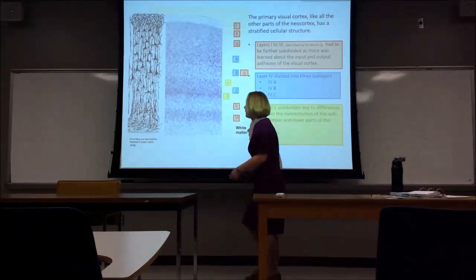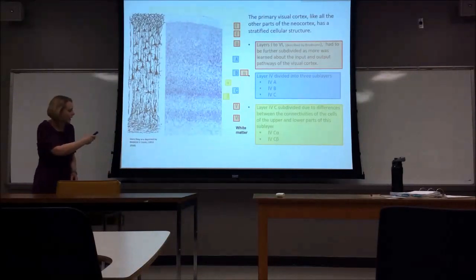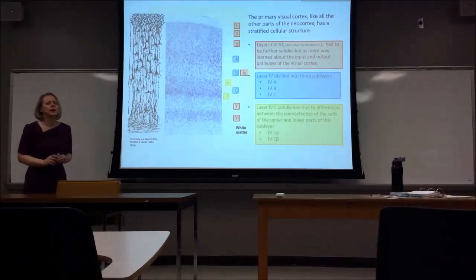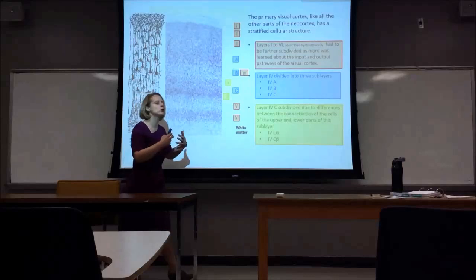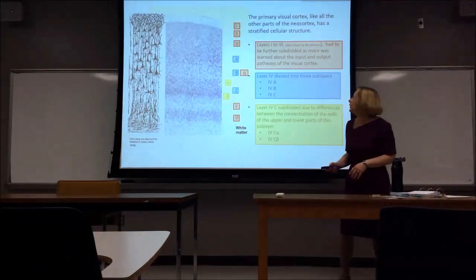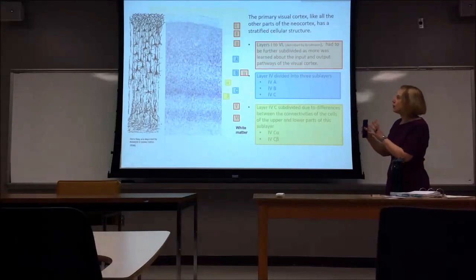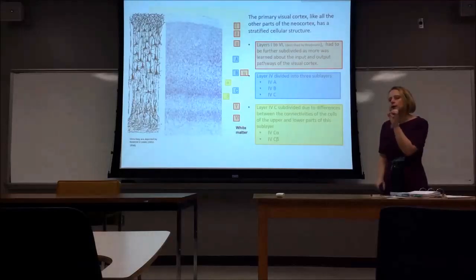This is of course from Ramón y Cajal, who still blows my mind — he hand drew it. Not all of the cortex is this neatly organized. This is stripy, it's beautiful, it's organized into beautiful columns. Not everything looks this good. The primary visual cortex, like all other parts, has a stratified cellular structure, and it has a really funny naming system.